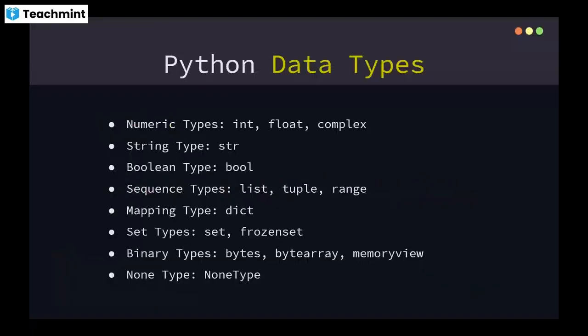Next topic is data types. Python supports numeric types: int, float, complex; string type (str) for text data; boolean type for true/false logical data; sequence types: list, tuple, range; mapping type: dictionary; set types: set and frozenset; binary types: bytes, bytearray, memoryview; and finally NoneType.